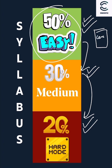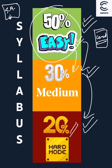For example, take structural analysis: do the easy-level questions from structural analysis first, then move on to the next subject at the easy level. After covering all subjects at the easy level, come back for medium-level questions. For the hard level, you can skip the ones you find extremely difficult — I did that myself. It's up to you, but that is my recommendation.